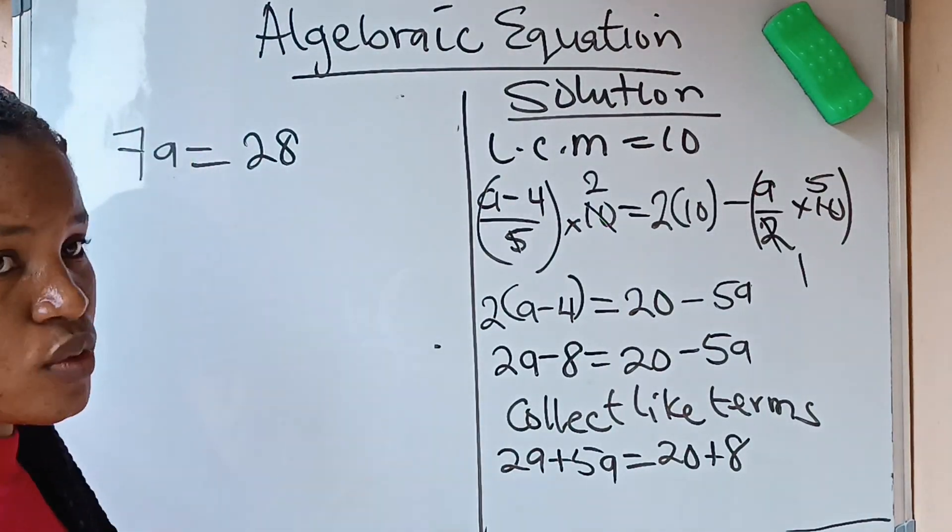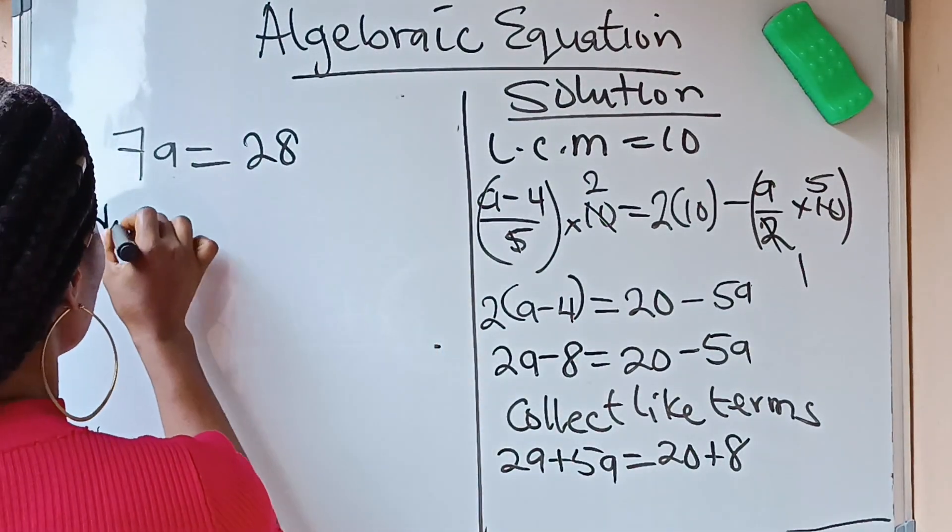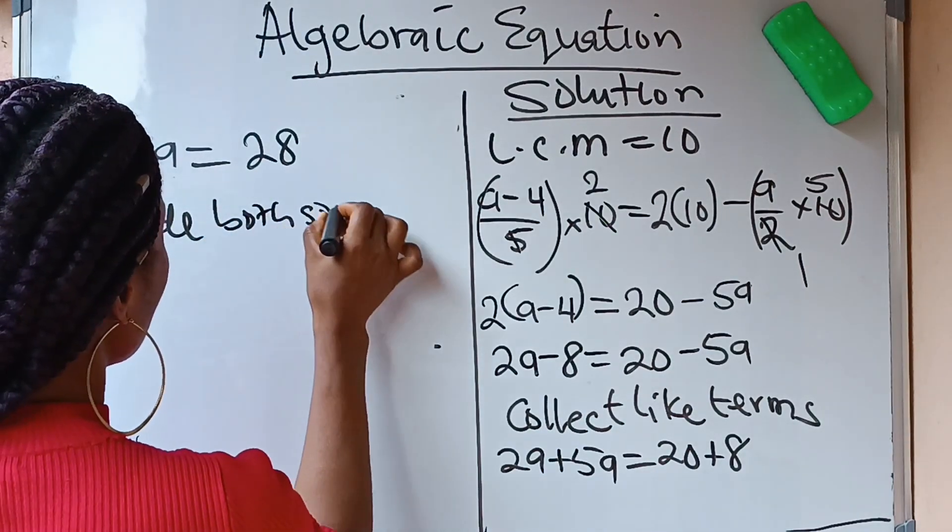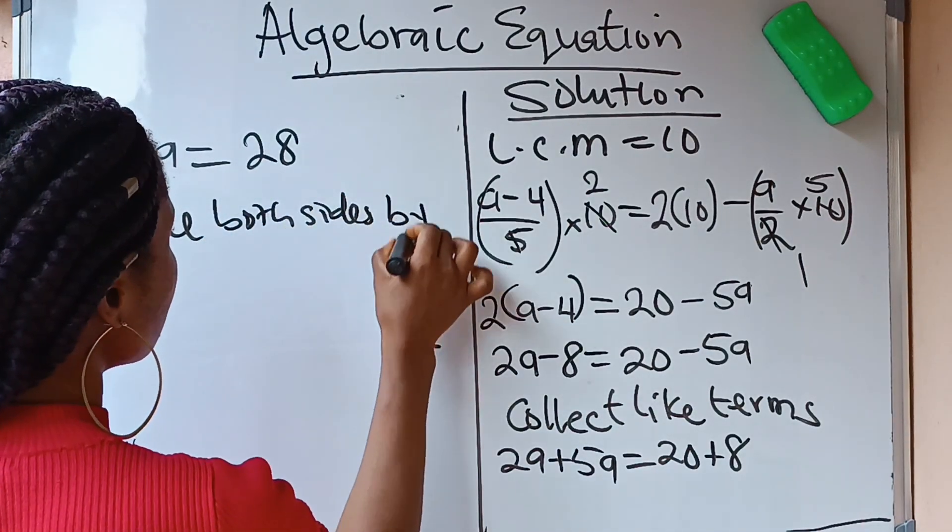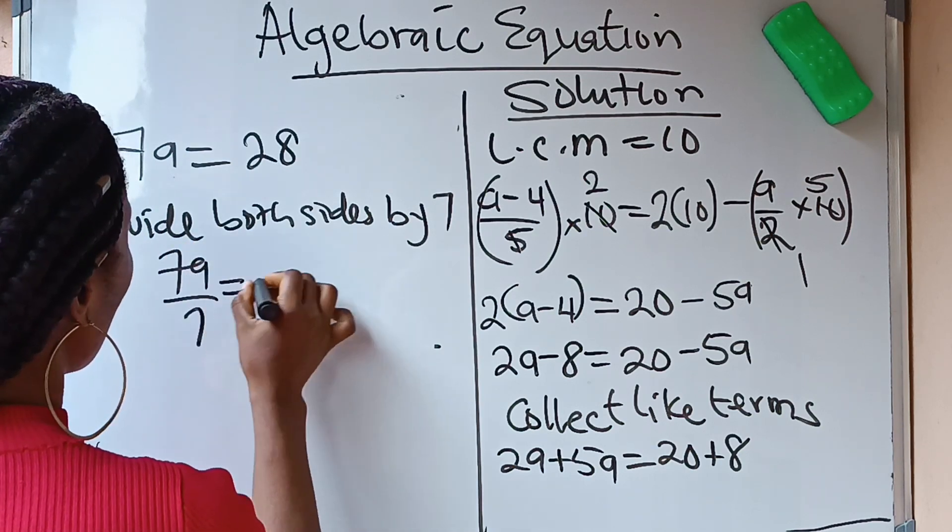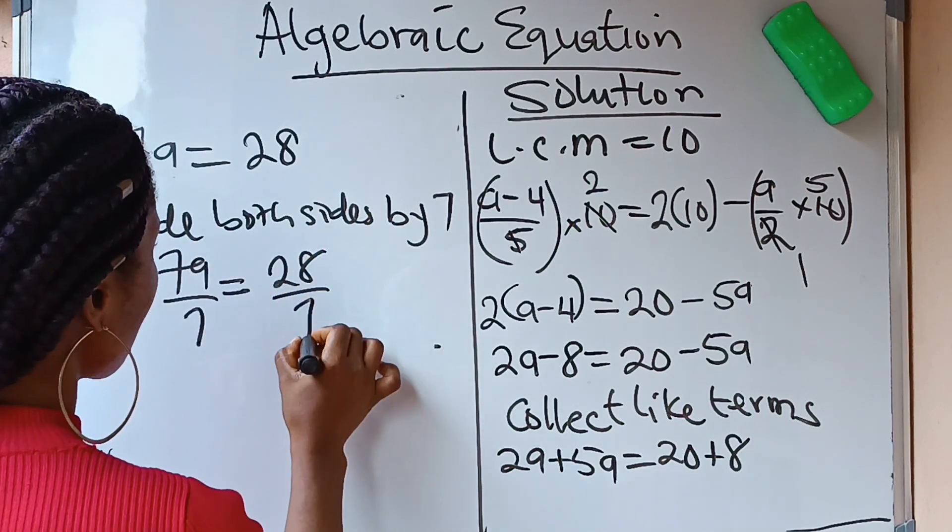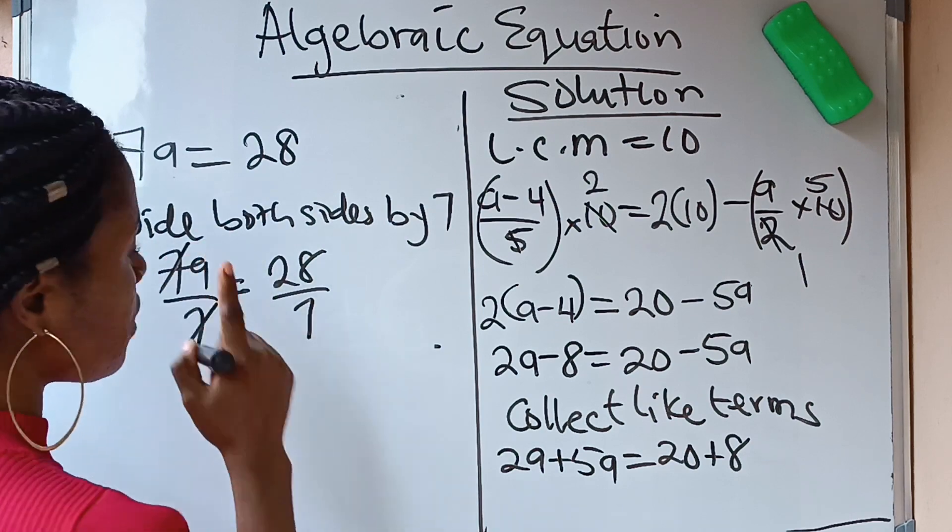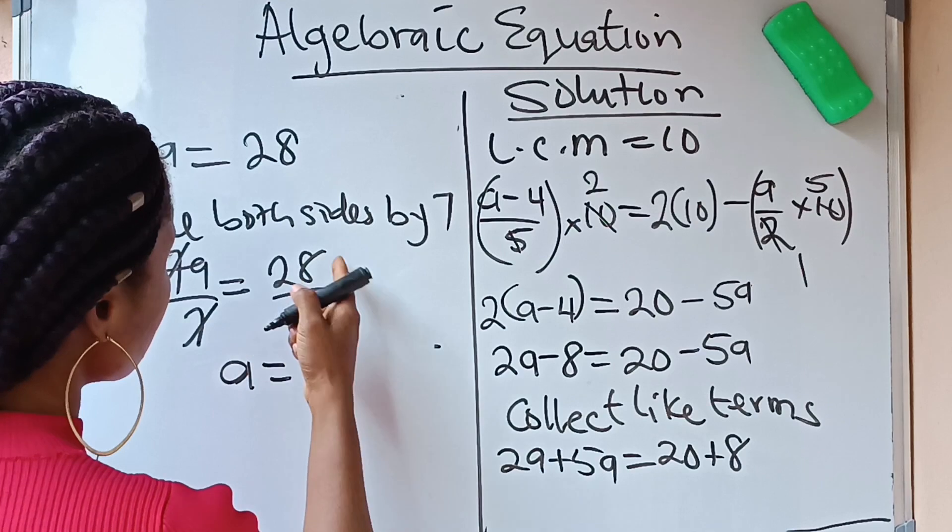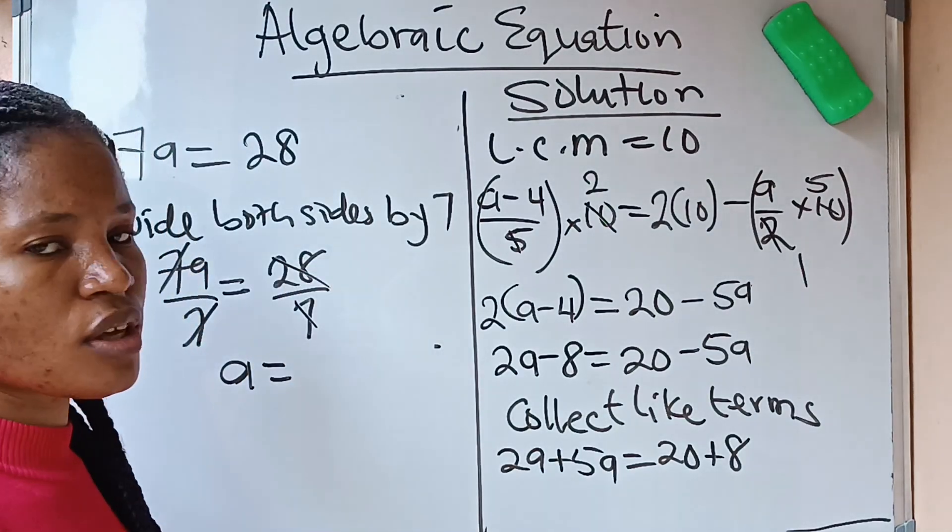Let us continue. We have 7A is equal to 28. We are going to divide both sides by 7. So, we are going to have 7A over 7 is equal to 28 over 7. This 7, we cancel, we are left with A. So, it means that A is equal to 28 divided by 7 is going to give us 4.